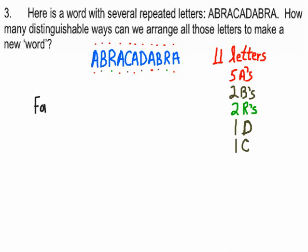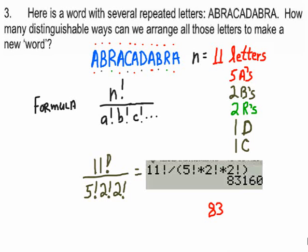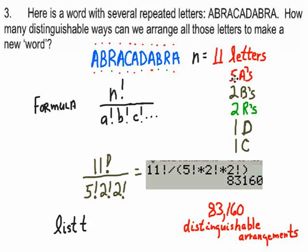Now we follow the secret formula for the distinguishable number of arrangements when some objects are repeats. If they were all different it'd be 11 factorial, but they're not. So you divide by 5 factorial for the A's — that's 120 ways to juggle the A's — then divide by 2 factorial for the B's and 2 factorial for the R's. Dividing by 1 factorial is really just dividing by 1, so we skip those. The answer is 83,160 distinguishable arrangements of those 11 letters.